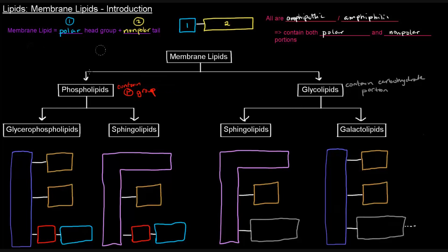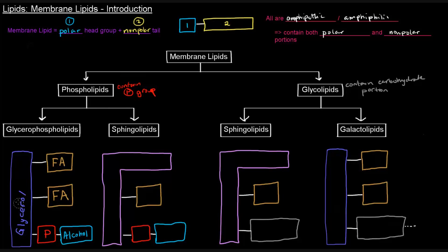So let's look at those. A glycerophospholipid has a glycerol backbone — that should make sense given the name. It's a phospholipid because it has a phosphate group, shown here in the red portion, and the glycerol refers to the glycerol backbone. The phosphate group is part of the polar head group, with some alcohol attached to that phosphate group. The other two groups attached to the other two carbons of glycerol are just fatty acid groups.